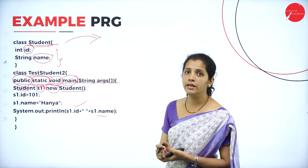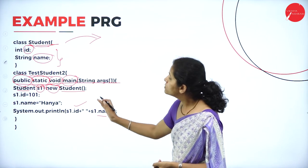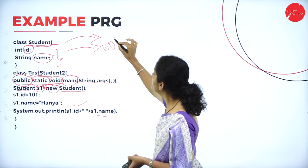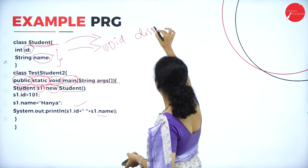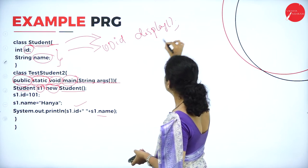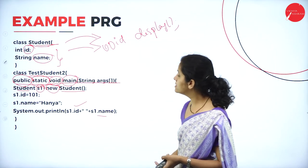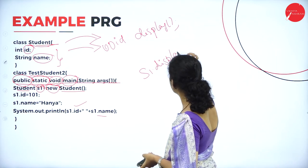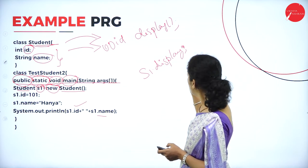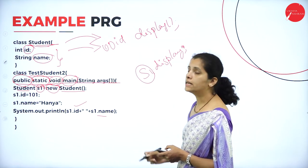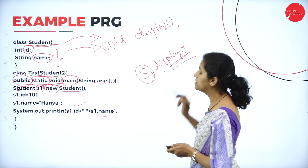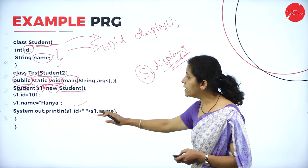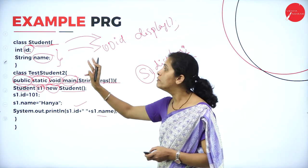If my class has a function — for example 'void display()' — and I want to call it, I use 's1.display()'. To call members I need an object along with the dot operator and method name. This is the simple program to create a class, create an object, and make use of fields and methods.